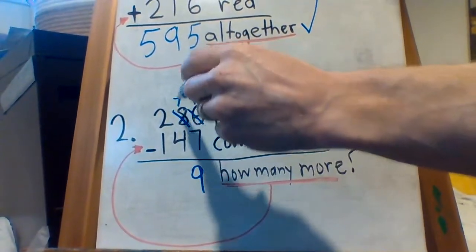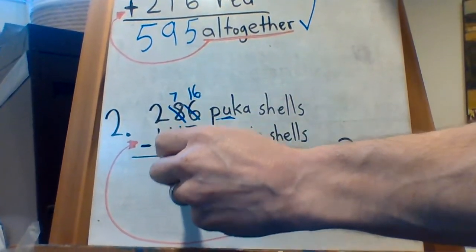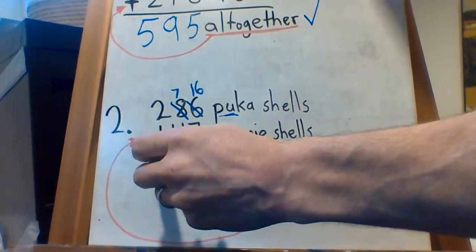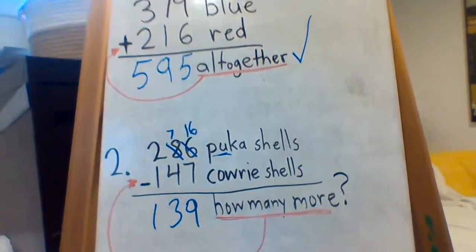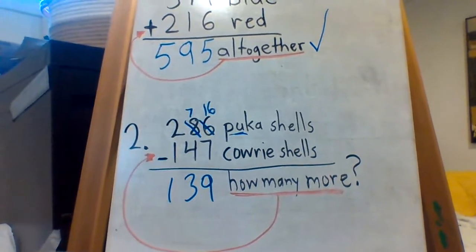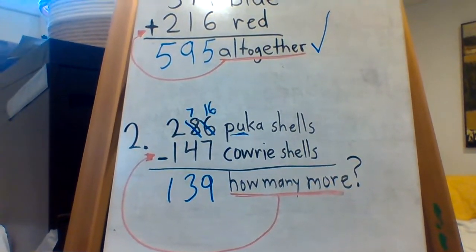Good. 7 take away 4 is 3. And 2 take away 1, of course, is 1. So about 139 more puka shells than cowrie shells.